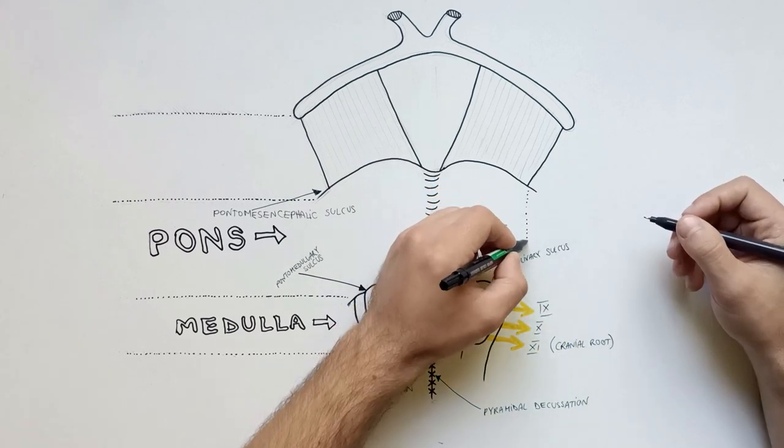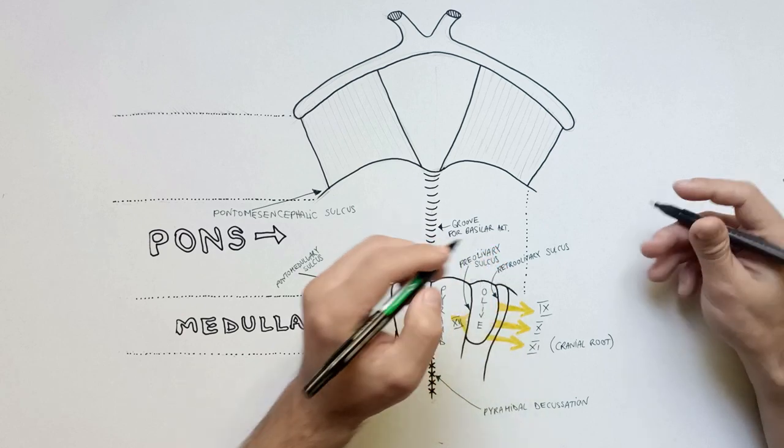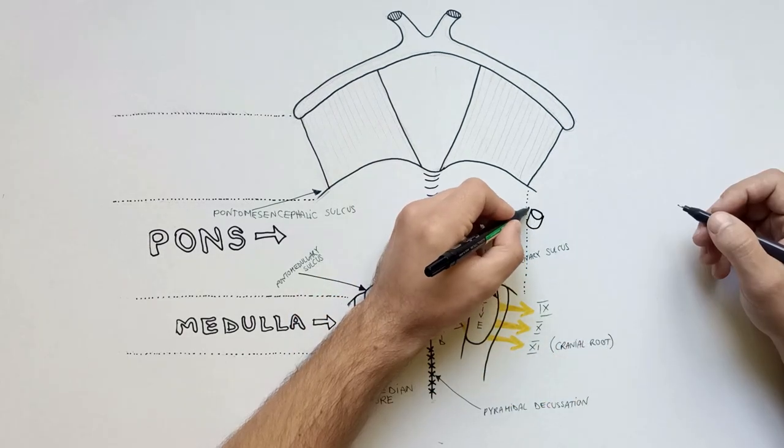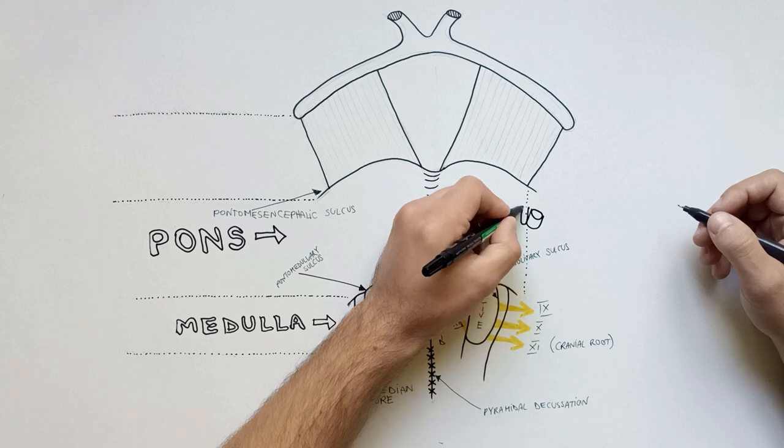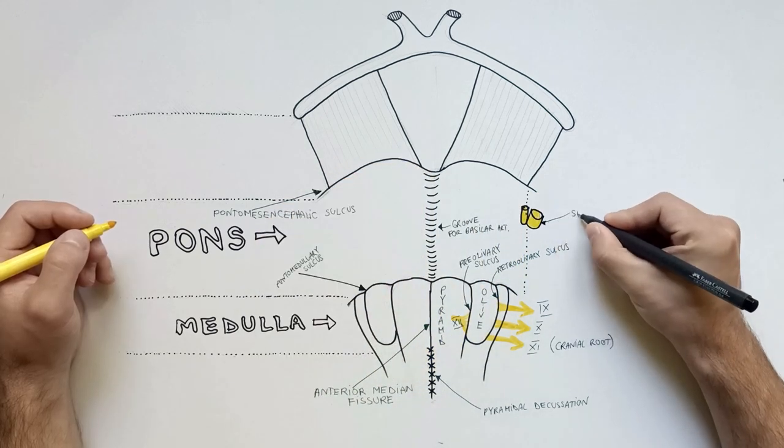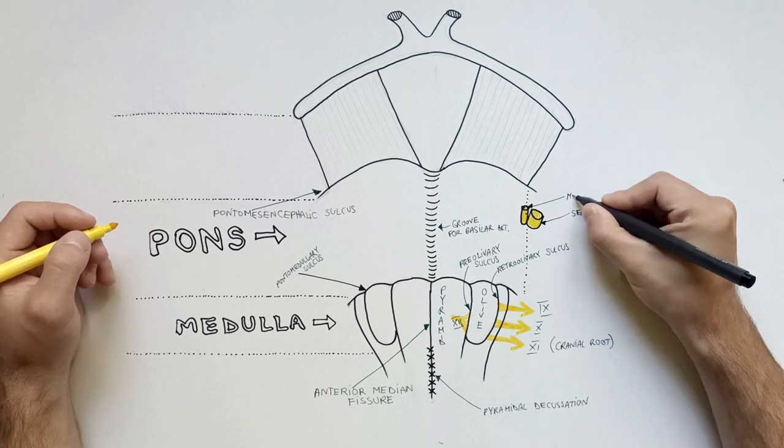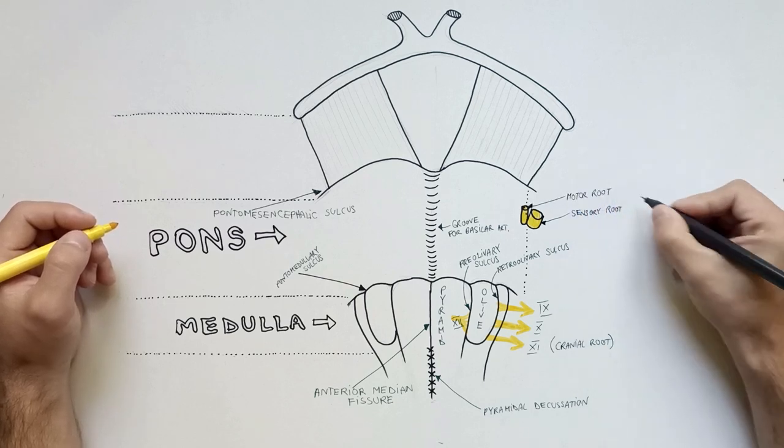Laterally, marking the limit between pons and the middle cerebellar peduncle is the apparent origin of the trigeminal nerve or the fifth cranial nerve. The trigeminal nerve is comprised of a laterally large sensory root and a medially smaller motor root.